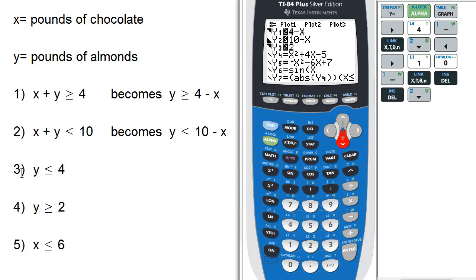The third inequality is y is less than or equal to 4, so my y3 will be less than or equal to 4. So I make that less than or equal to by pressing alpha and zoom for f3, less than or equal to 4.